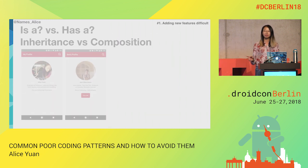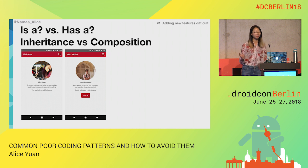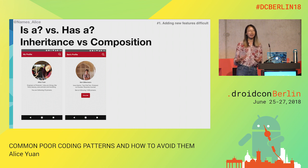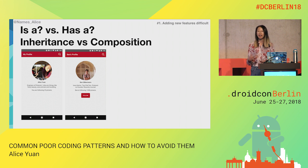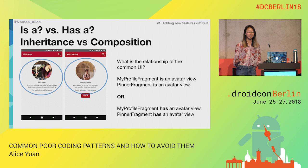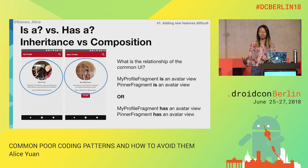So, what's the solution? Well, this is a classic example of using the wrong architecture strategy. When we think about these commonalities between the two views, let's think about what the relationship is. We describe inheritance as an 'is' relationship. On the other side, there is composition, which is a 'has' relationship. When we look at these two views, it makes total sense that these two fragments should have the avatar view rather than inherit the avatar view.